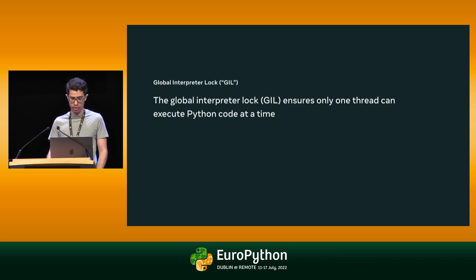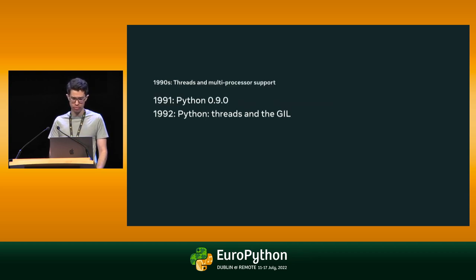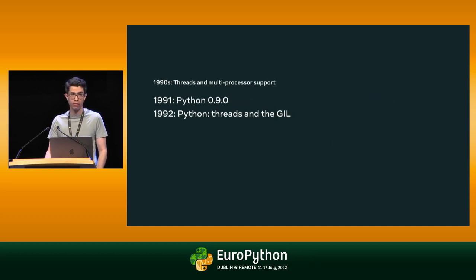One of the big obstacles to efficiency is that the global interpreter lock, or GIL, ensures that only one thread can run Python code at a time. When Python was first publicly released in 1991, it didn't support threads or have a global interpreter lock. Support for threads was added about a year later, in 1992, together with the GIL.